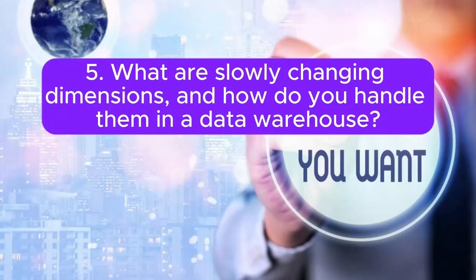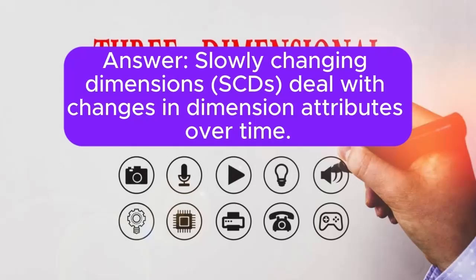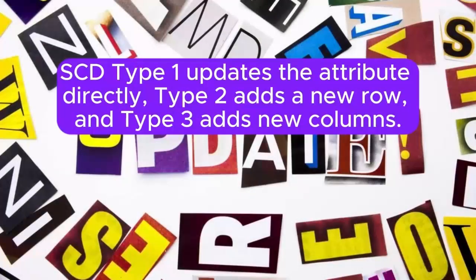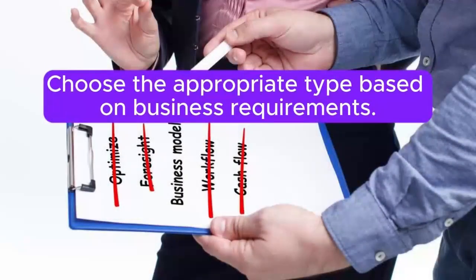Question 5: What are slowly changing dimensions, and how do you handle them in a data warehouse? Answer: Slowly changing dimensions (SCDs) deal with changes in dimension attributes over time. SCD type 1 updates the attribute directly, type 2 adds a new row, and type 3 adds new columns. Choose the appropriate type based on business requirements.